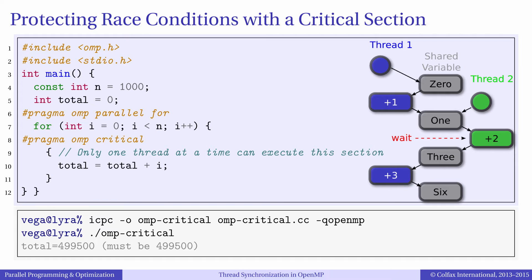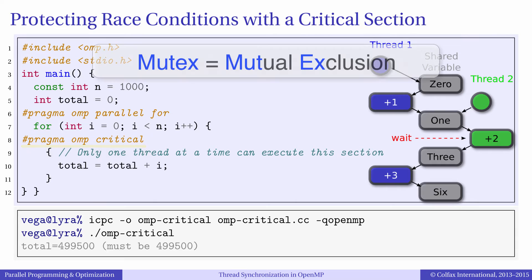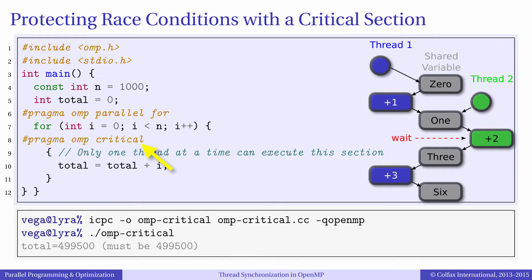Let's see how we can use the OpenMP mutex called critical section to stabilize the performance of the application. Mutex is short for mutual exclusion. The meaning of this is that the critical section allows one thread to execute a piece of code while the other threads are excluded from this code.